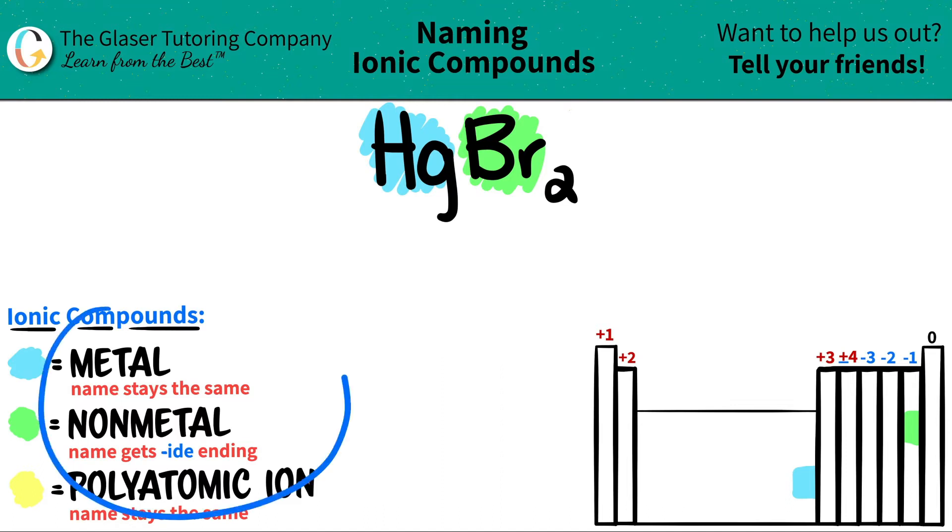So now let's just get to naming. The metal name always stays exactly the same. So since it was mercury on the periodic table, it's still going to be mercury.